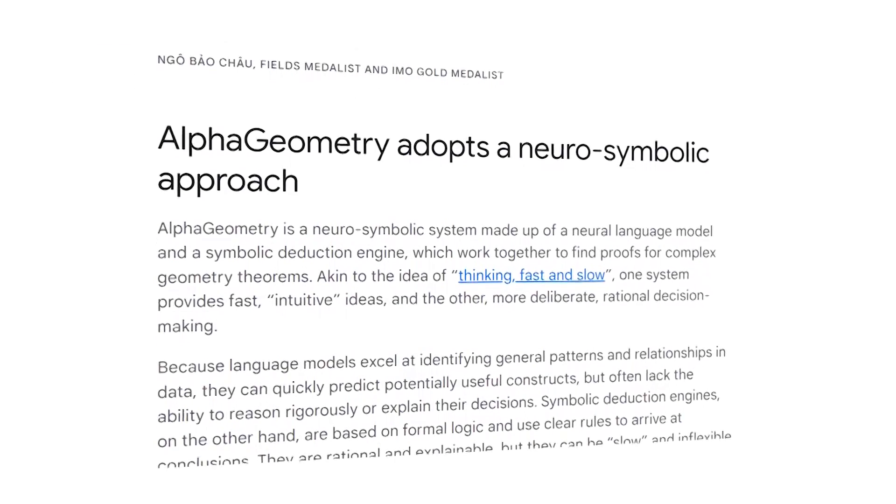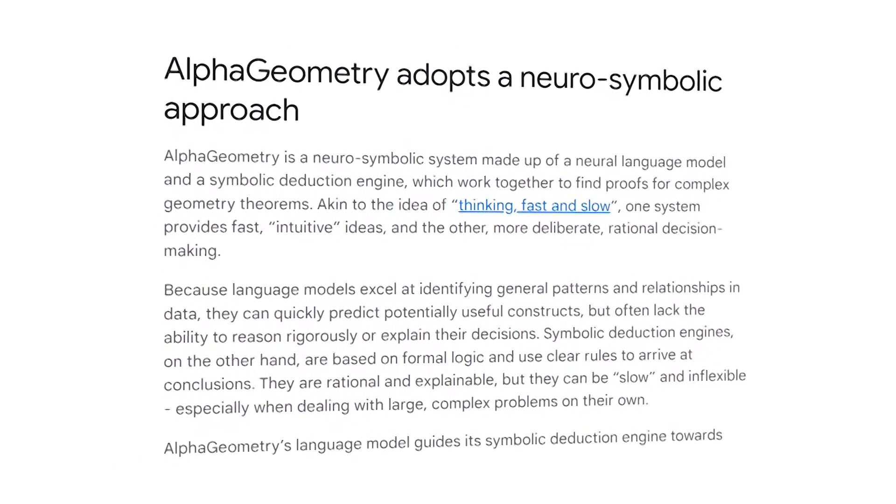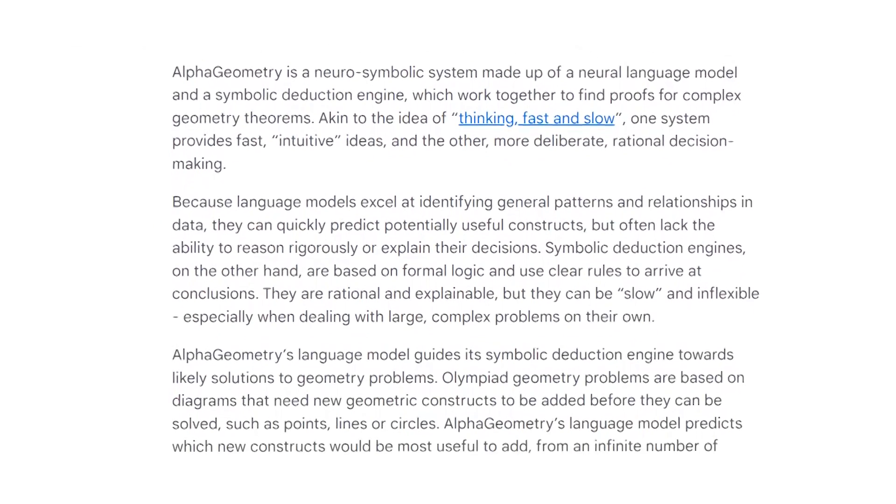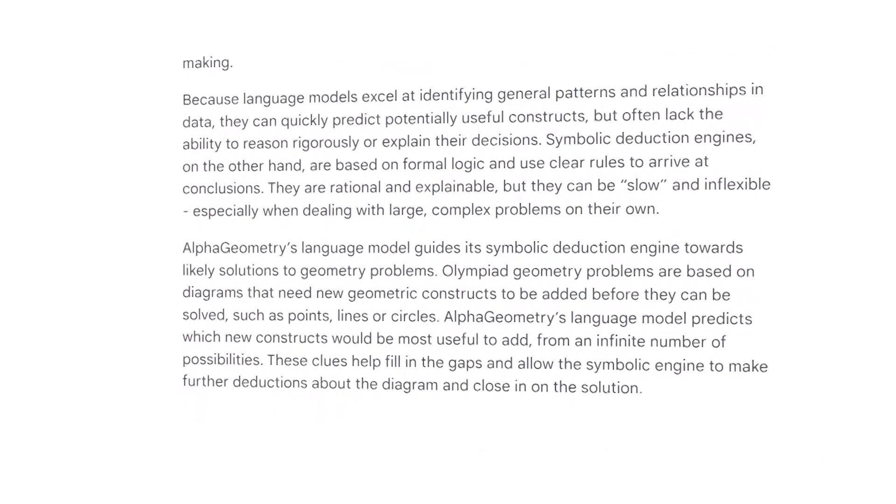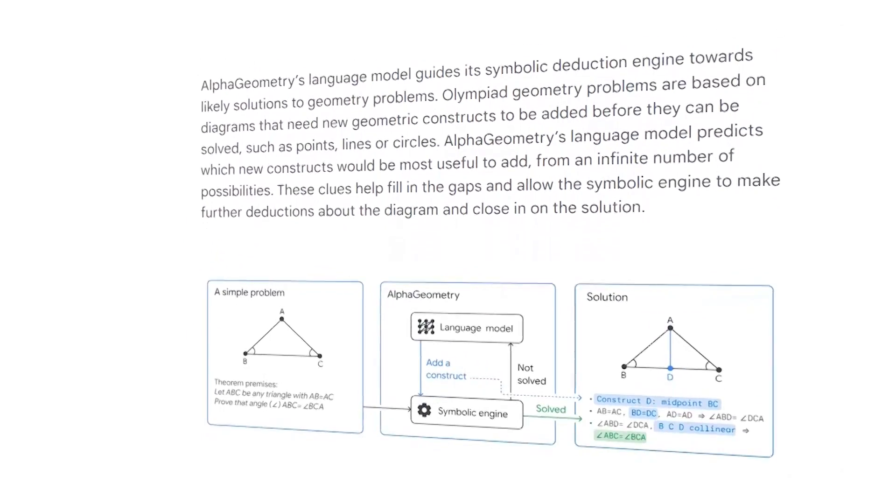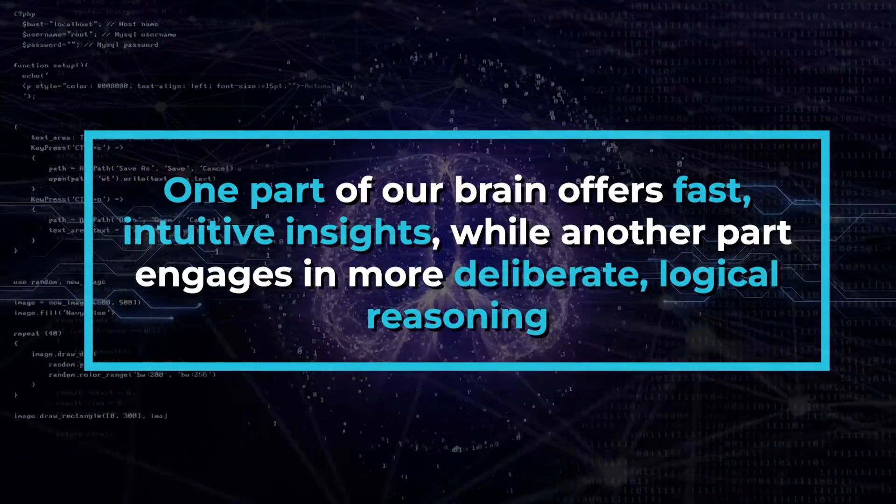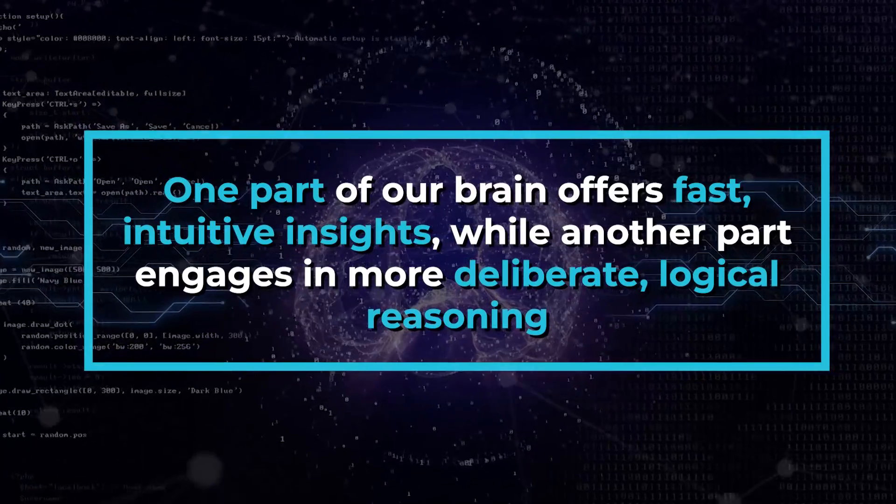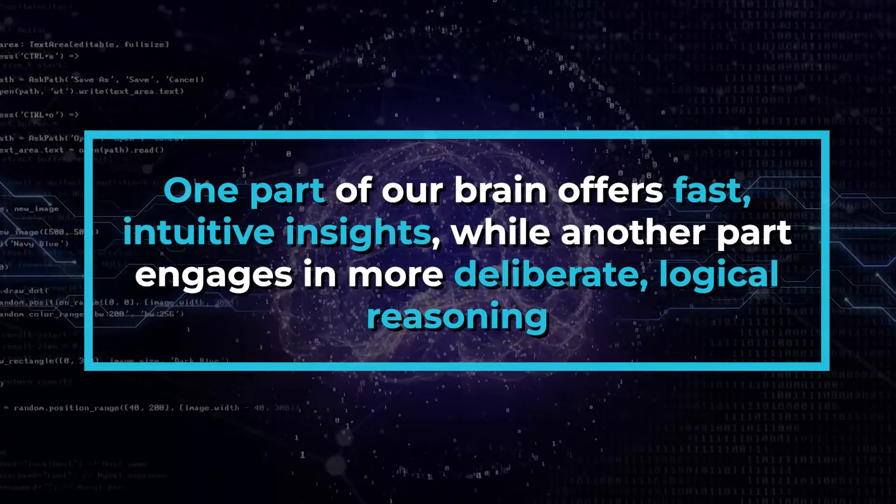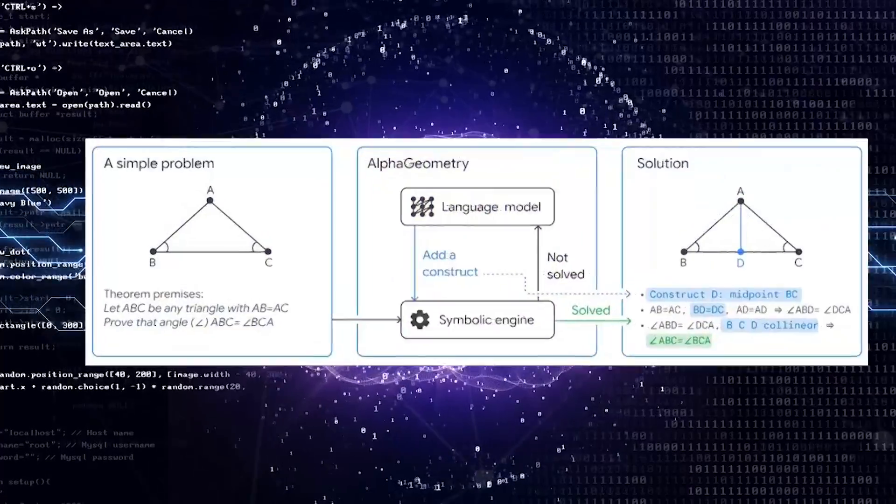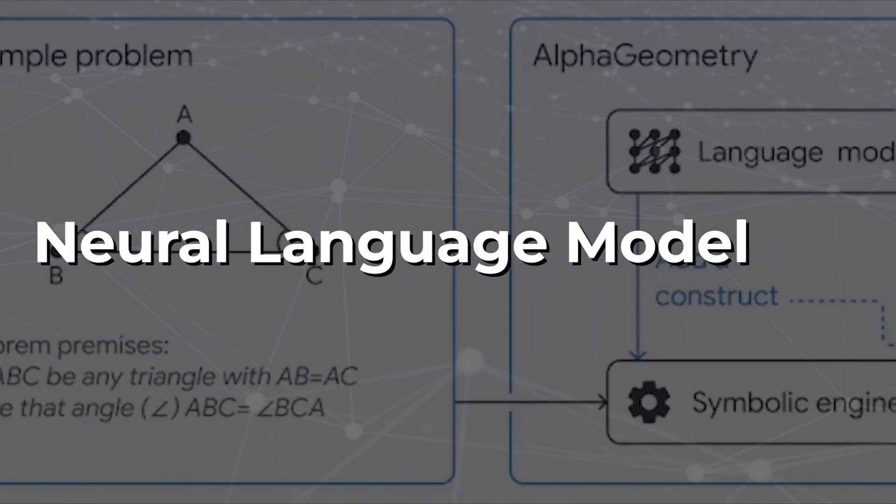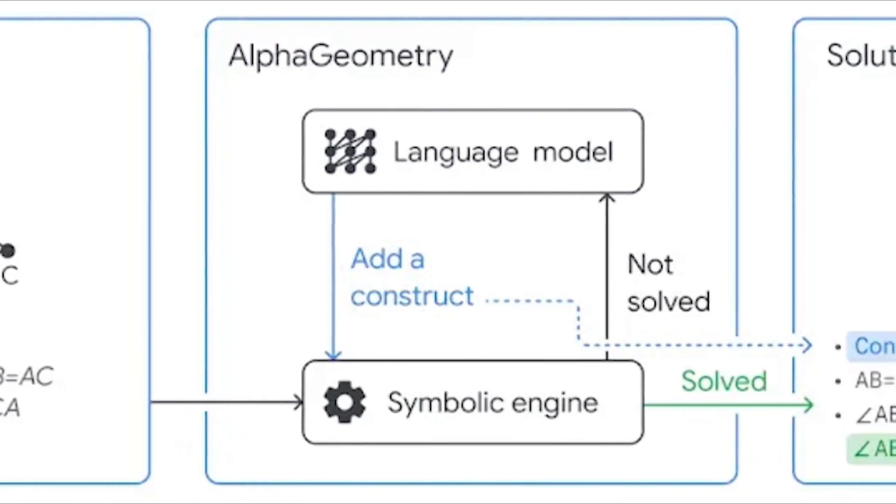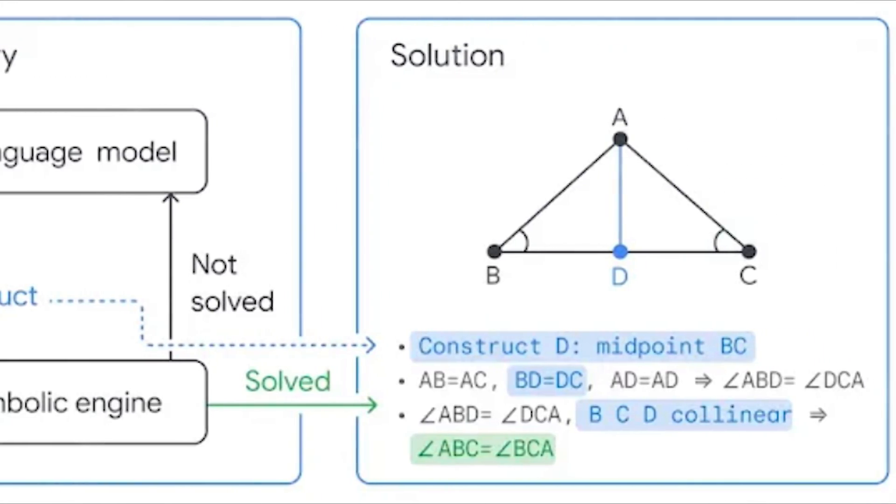At the heart of Alpha Geometry lies a cutting-edge neuro-symbolic approach, a blend of neural language models and symbolic deduction engines. This dual system mirrors the way humans solve problems. One part of our brain offers fast, intuitive insights, while another part engages in more deliberate, logical reasoning. Alpha Geometry's neural language model acts like our intuition, quickly sifting through data to find patterns and suggest potential solutions.